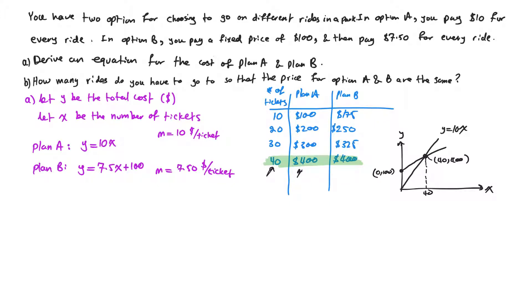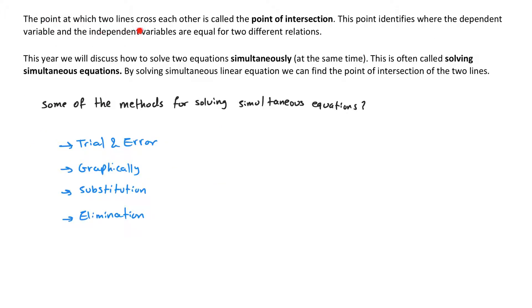Another method of solving for this point is using graphing techniques. This point is called the point of intersection, because it's the point where one line or function meets or intersects the other line. This point identifies where both the dependent variable and the independent variable are equal for two different relations or functions.